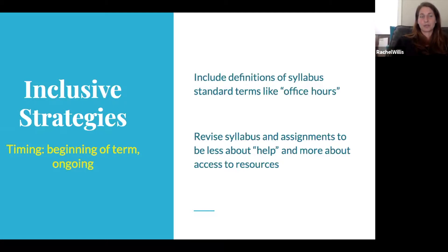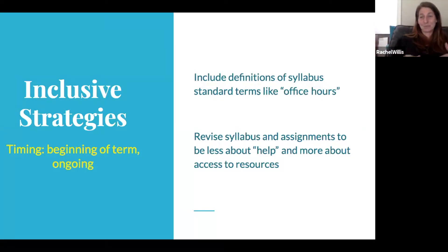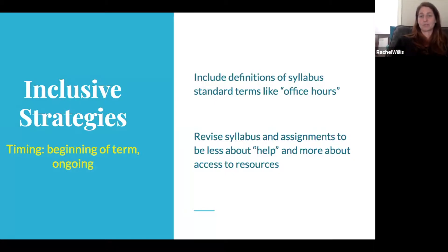One tool you can use right off the bat is thinking about standard terms you use in courses. There was something going around earlier this semester about students not knowing what office hours are. It's great if instructors can explain: an office hour is when you can expect me to be there. We are aware of obstacles that students feel stand in the way of us and them, and unfamiliar terms are part of those obstacles. So I explain to students: my office hours are from here to here — this means you don't need to email me for an appointment, you can come whenever you need to, and I want you to come.